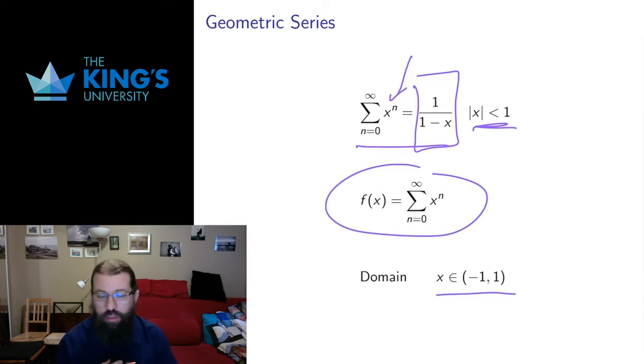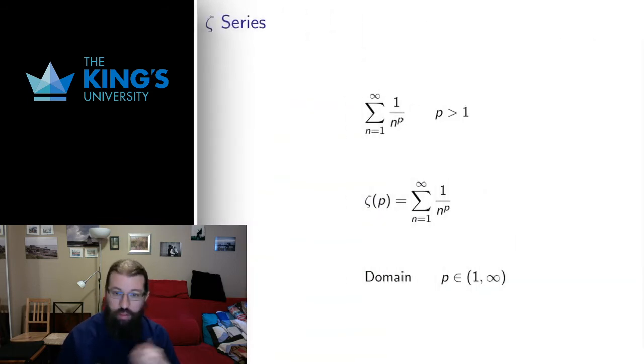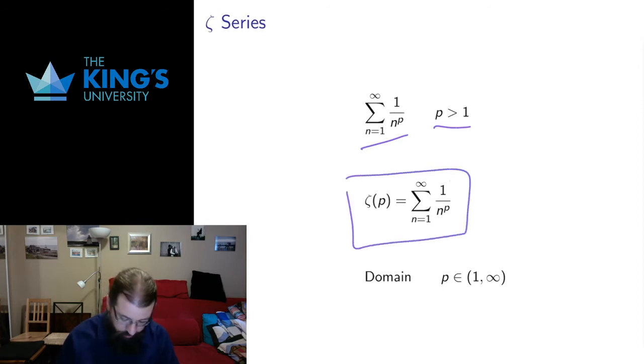So its domain is all numbers between negative 1 and 1. So what we were already doing with geometric series was already talking about series functions if we just do a little reinterpretation of what we meant with the common ratio and treat that instead of a common ratio r as some variable x. The same is true for the zeta series. We said that the zeta series converge when the exponent is strictly greater than 1. And we even wrote this down. I said that these related to a famous function called the zeta function.